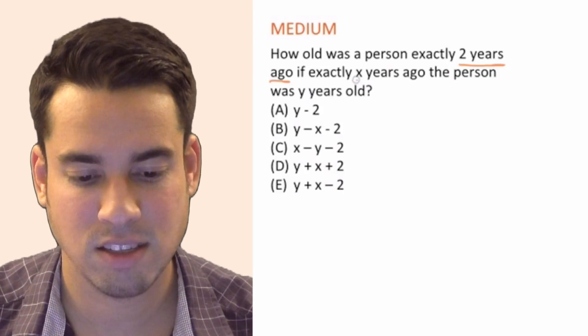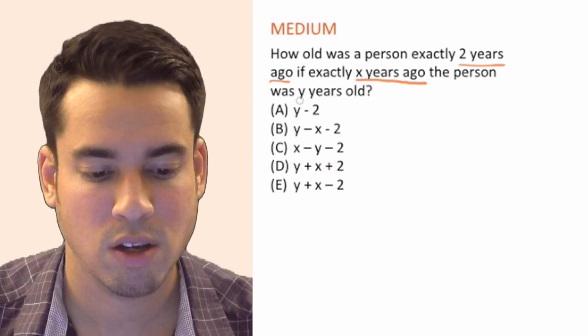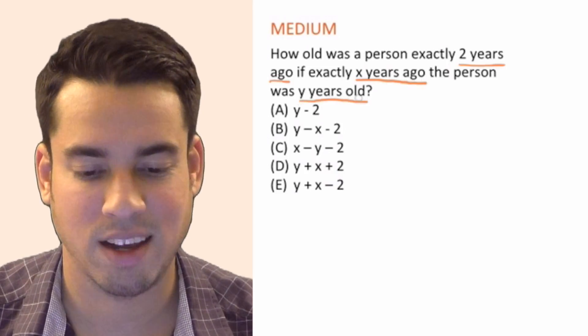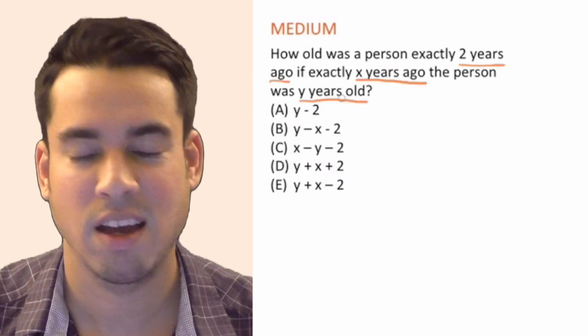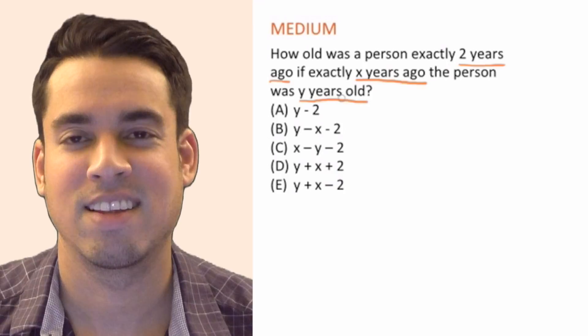So we've got X years ago, X years in the past, the person was Y years old and we want to know in terms of X and Y how old this person was two years ago.